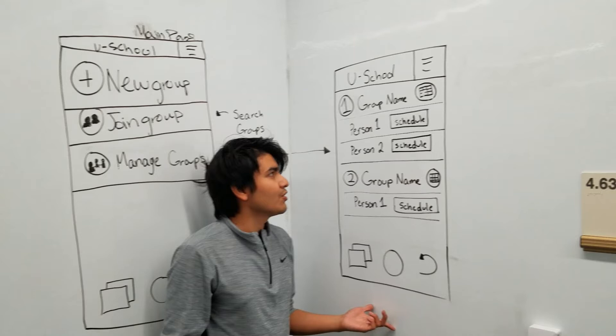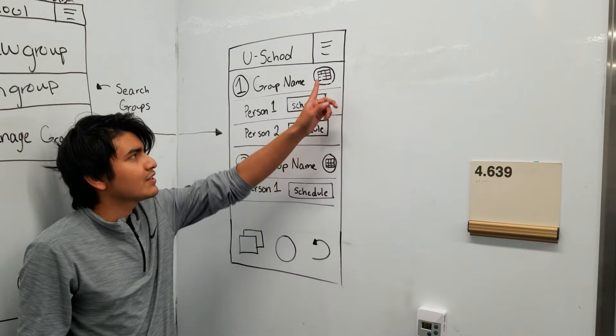If you click the manage group tab, you're taken to this page where it shows a list of all the groups you've joined. Here you can review each person's schedule. If you click this icon, you're taken to the next page.